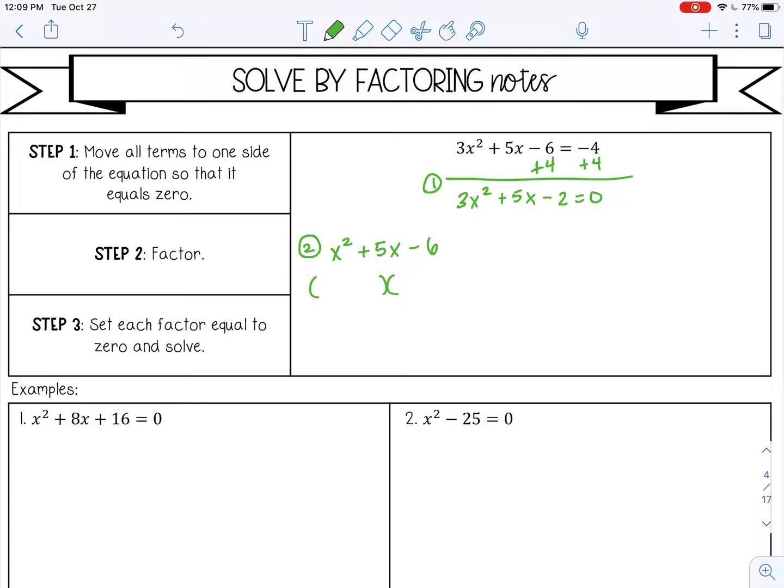Now I'm going to factor this trinomial where a is one, so I just need the factors of six that we're going to add or subtract to give me five. The factors of six are one and six, two and three. Both of those could give me five.